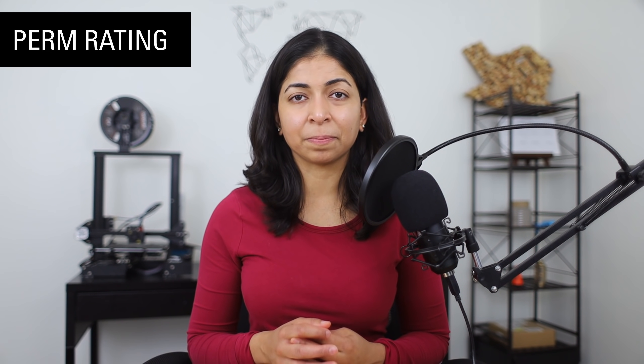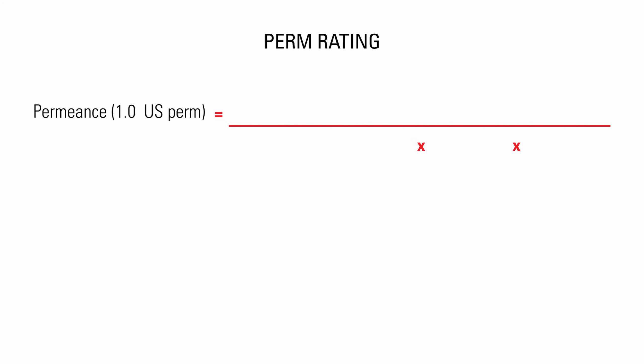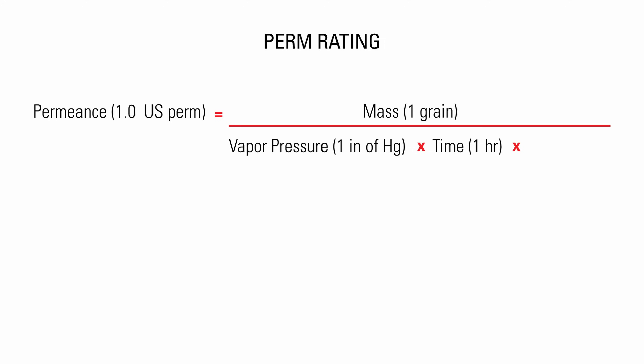To measure the ability of a material to let water vapor pass through, we came up with a rating system called perm rating. In the US, a permeance or perm rating of 1.0 means that in one hour, when the vapor pressure difference between the cold side and the warm side of a material is 1 inch of mercury, 1 grain of water vapor will pass through 1 square foot of the material. 1 grain of water is equal to 1/7000th of a pound.